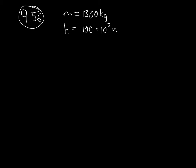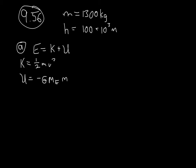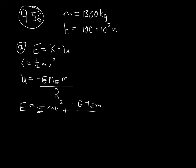For part A, we need to find the total energy of this satellite when initially in orbit, when it comes to rest on the ground, and how much the energy has changed. The energy in orbit equals kinetic energy plus potential energy. Kinetic energy is one-half m v squared, and gravitational potential energy is negative G times mass of Earth times mass of the satellite divided by R.